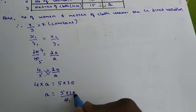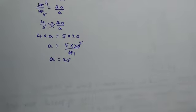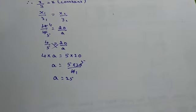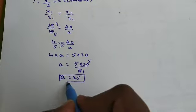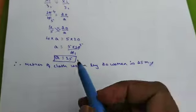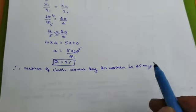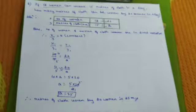Then A equals 5 into 5, which is 25. So we got the value of variable as 25. Therefore meters of cloth woven by 20 women is 25 meters. This is how we have to solve the question.